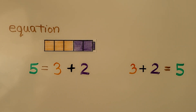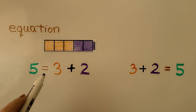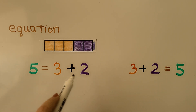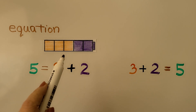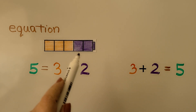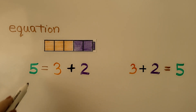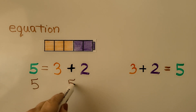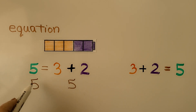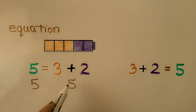So this is what I mean. We have our 5 and then our is-equal-to symbol, and then we have 3 plus 2. And 3 plus 2 is 3, 4, 5. We have a 5 on this side and a 5 on this side. This uses the number 5, and this uses 3 plus 2 for 5.